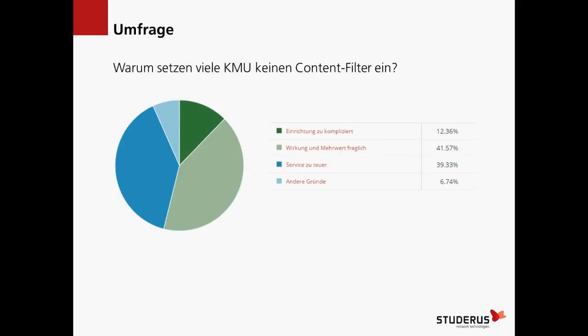Im Vorfeld zu diesem Webinar haben wir eine Umfrage gemacht – warum eigentlich viele KMUs gar keinen Content-Filter einsetzen. Rausgestochen haben die Antworten: Wirkung und Mehrwert fraglich, und Service zu teuer. Das ist nicht erstaunlich – wenn man Wirkung und Mehrwert als fraglich bezeichnet, ist klar, dass der Service als zu teuer angeschaut wird. Sinn des Webinars ist, Gegensteuer zu geben und aufzuzeigen, dass es sein Geld wert ist – und auch die Limitationen zu zeigen.